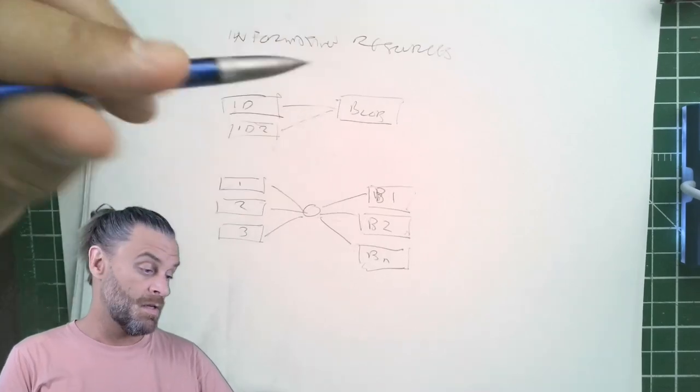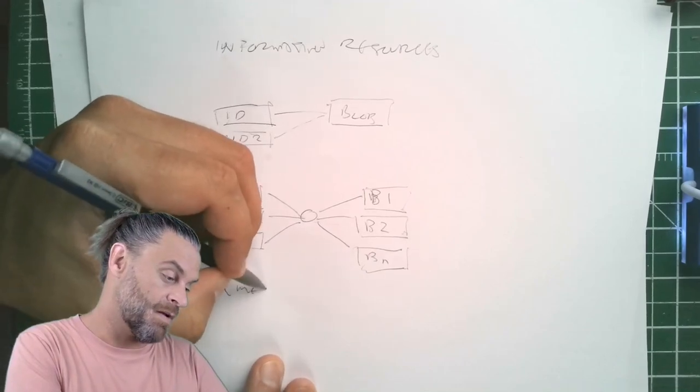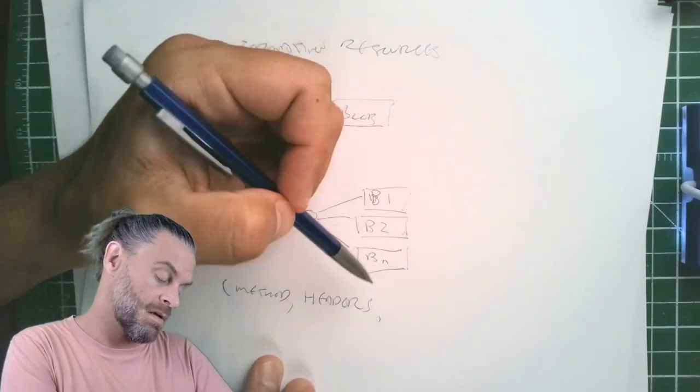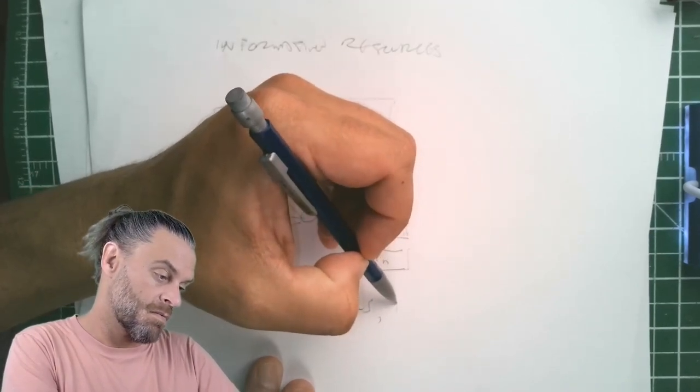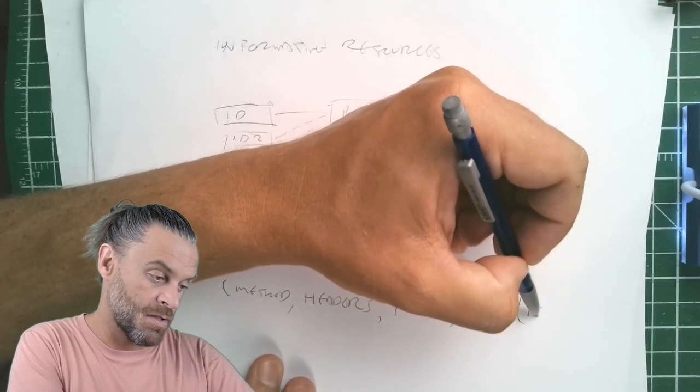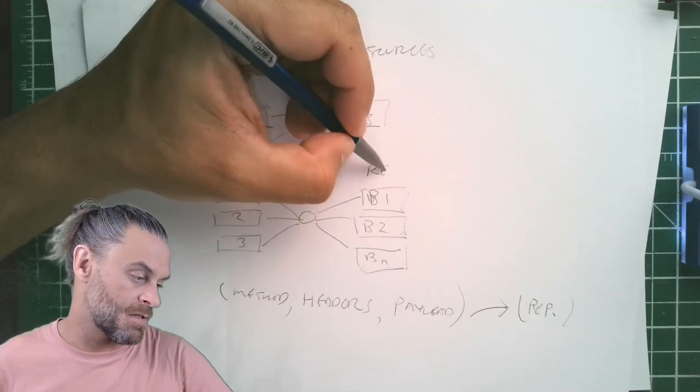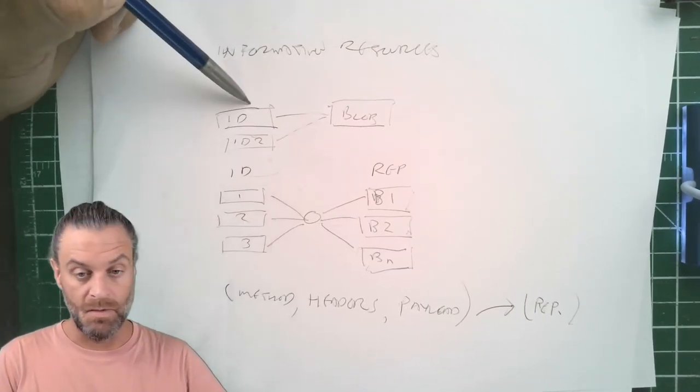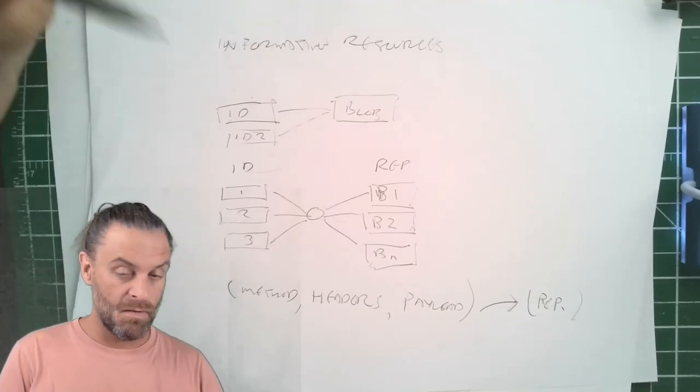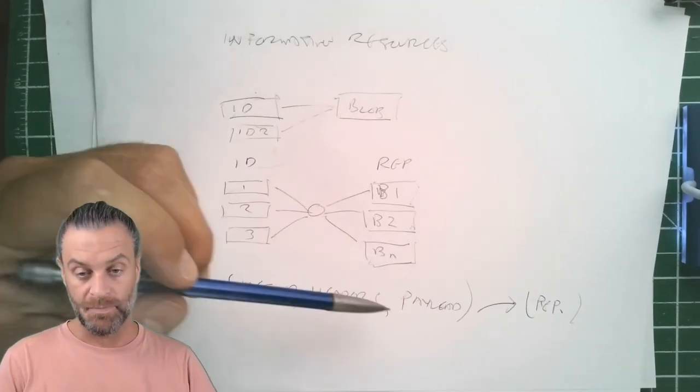And in HTTP you've got all sorts of verbs too. So you actually have a tuple and you've got headers for metadata. So you've got a tuple which is method, headers, payload, and then representation. And so what's on the right side: you've got identifiers, representations.